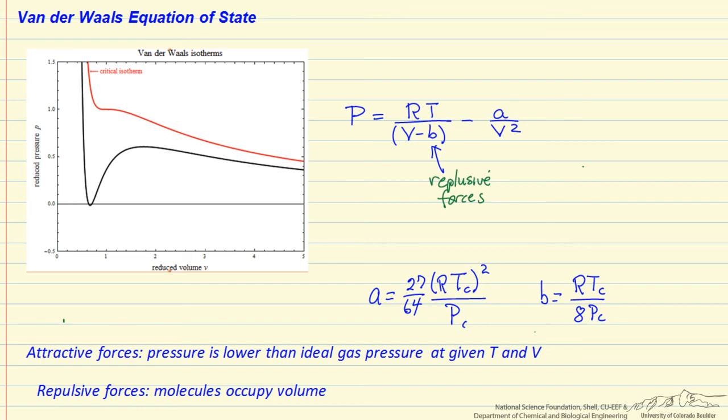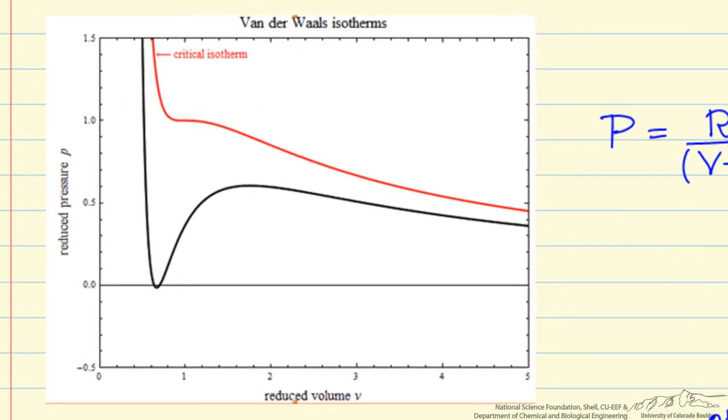The van der Waals equation of state is a cubic equation of state. So when we look at the reduced pressure plotted versus the reduced volume, we'll notice that for a number of conditions, for example at a reduced pressure of 0.4, there are three solutions to the cubic equation of state.